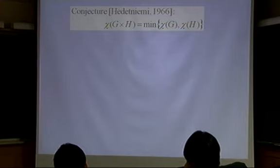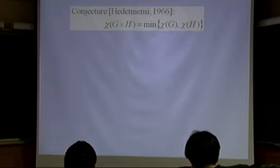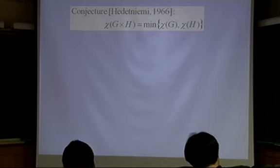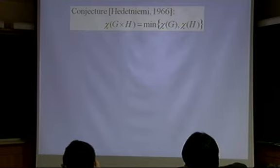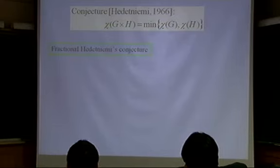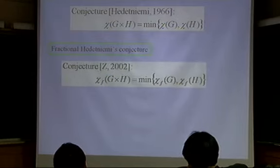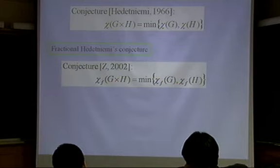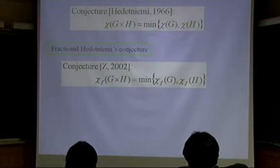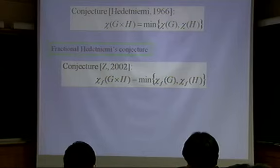There's no example showing G is not N-chromatic, but there's a famous conjecture — Hedetniemi's conjecture — which says the chromatic number of the product equals the minimum of the chromatic numbers of the two factor graphs. If this conjecture were true, we would be done. But Hedetniemi's conjecture has been open for about 45 years. In 2002, I wrote a paper about the fractional version of Hedetniemi's conjecture, looking at the fractional chromatic number of product graphs.